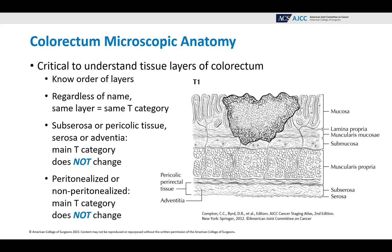Whether it's peritonealized or non-peritonealized, the main T category does not change. One way to think about this is if you have a house with a backyard, and maybe there's a fence between the very end of the backyard and the neighbor's yard. The house is like the colon, with the walls of the house being the muscularis propria. The backyard is that pericolic tissue or subserosa. If you come out of the house and you're in the middle of the backyard, it makes no difference whether there's a fence at the back of the yard or not — you're still in the middle of the backyard. So whether or not there's that fence, that serosa out there, doesn't affect the staging.